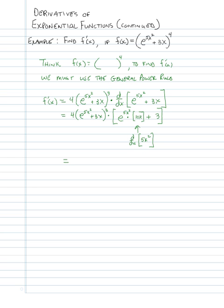Inside those brackets, we can rewrite it a bit. Rewrite the 4 and the parentheses with the power of 3. Simplifying and converting big brackets to parentheses, we write the 10x factor in front of the e. So it's 10x times e to the power 5x squared, plus 3 outside the parentheses. There's nothing else to do — we've found all the derivatives, and this is our final answer.